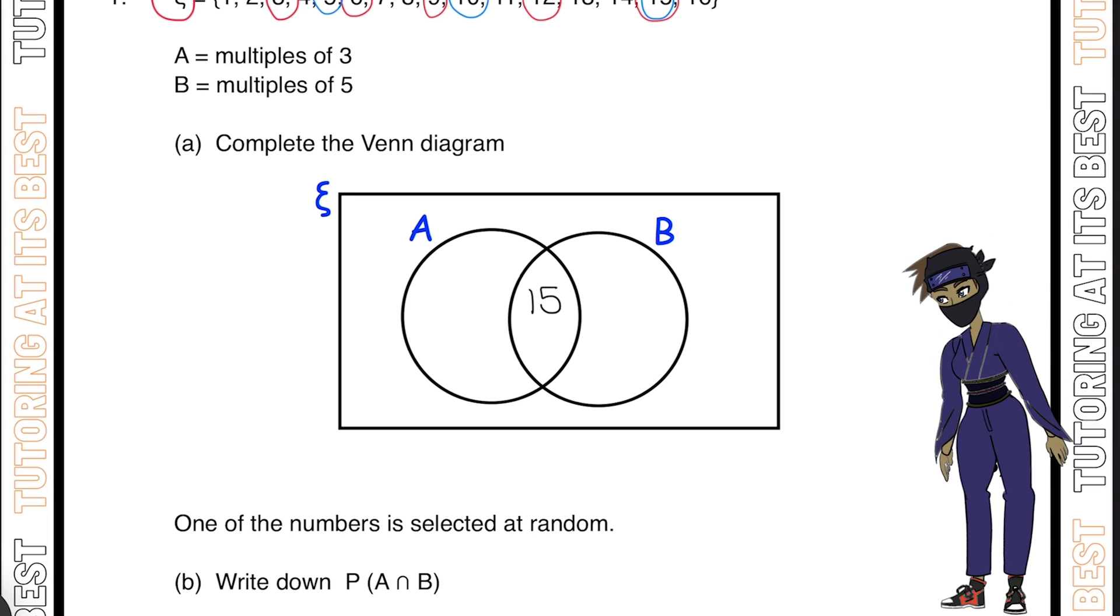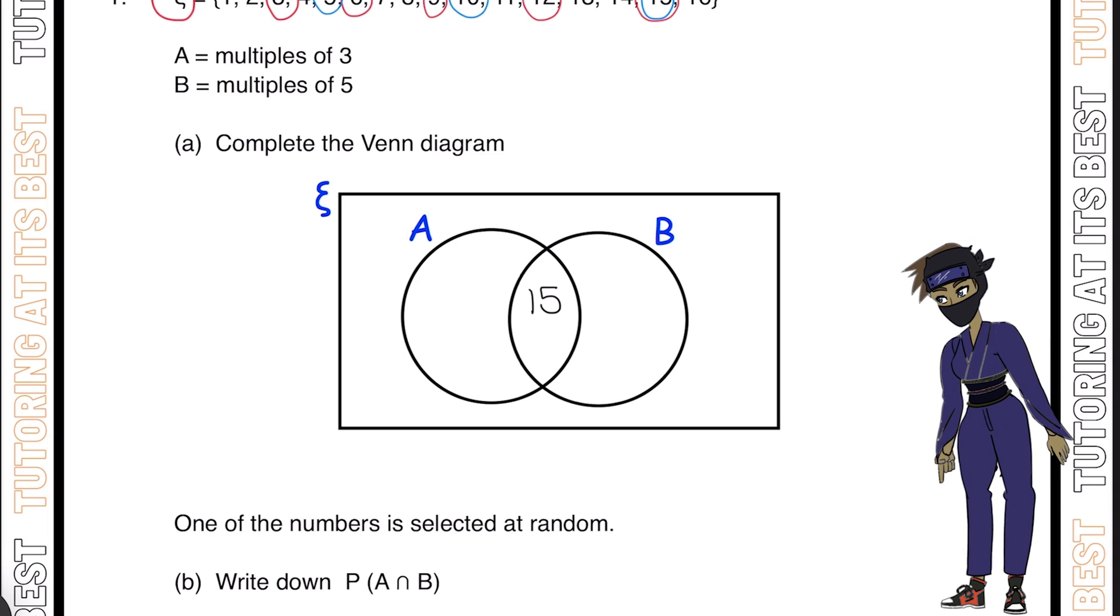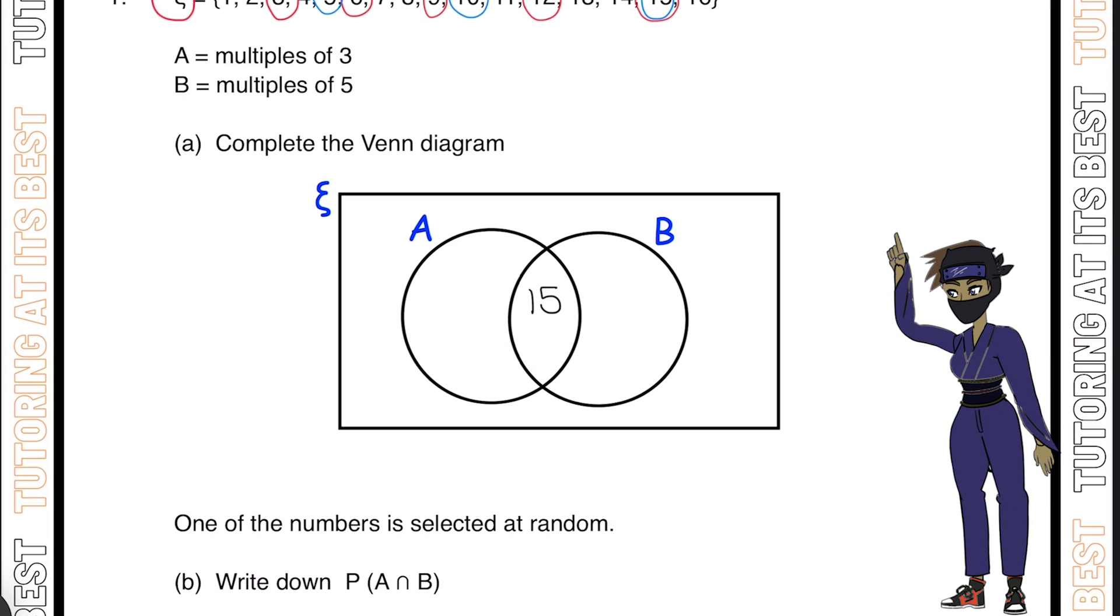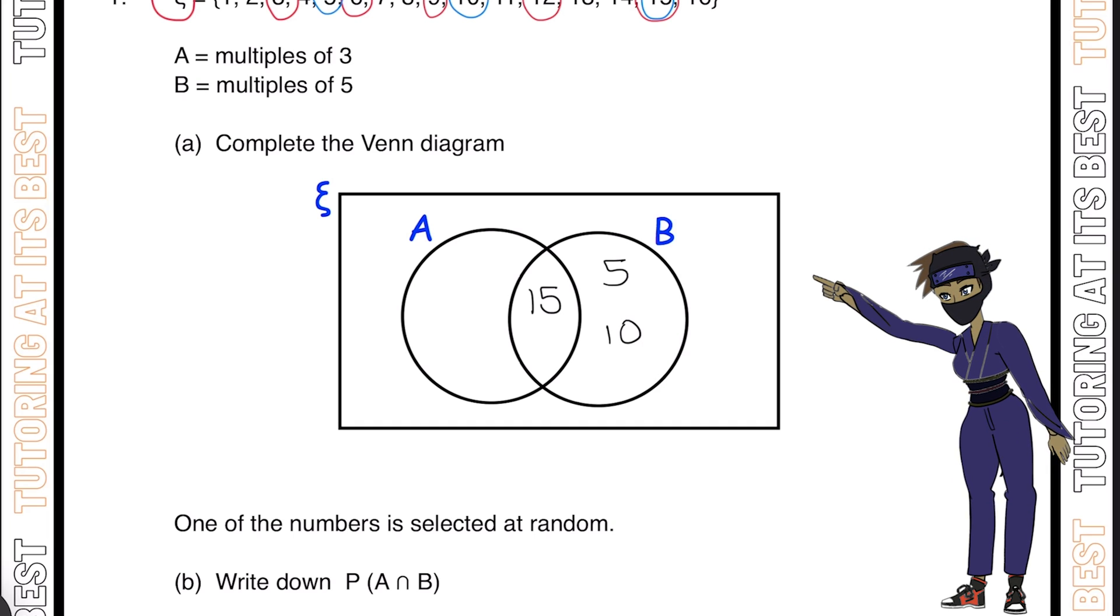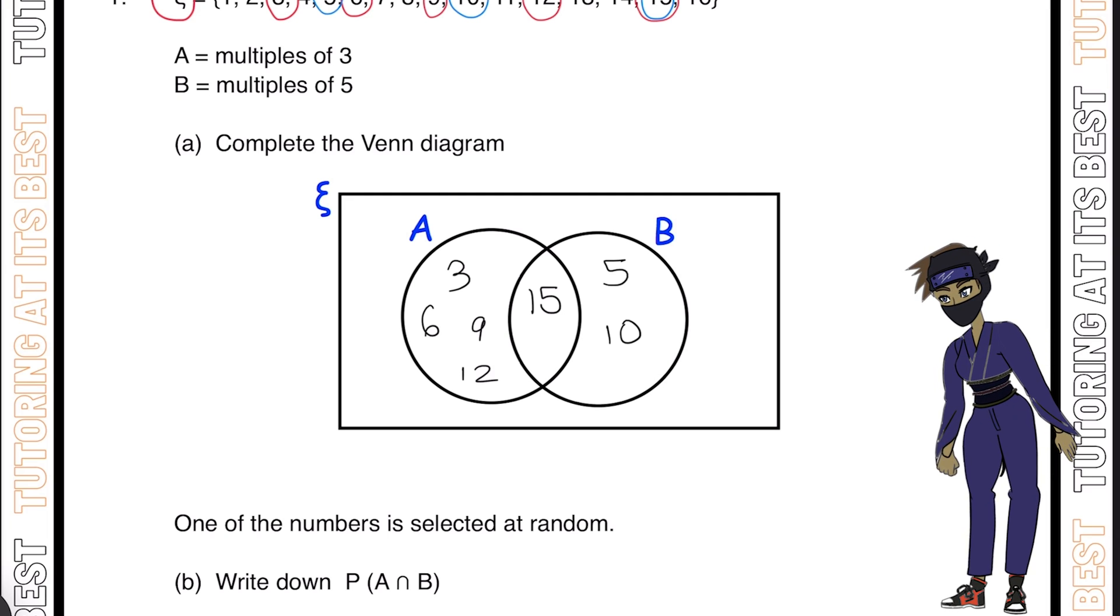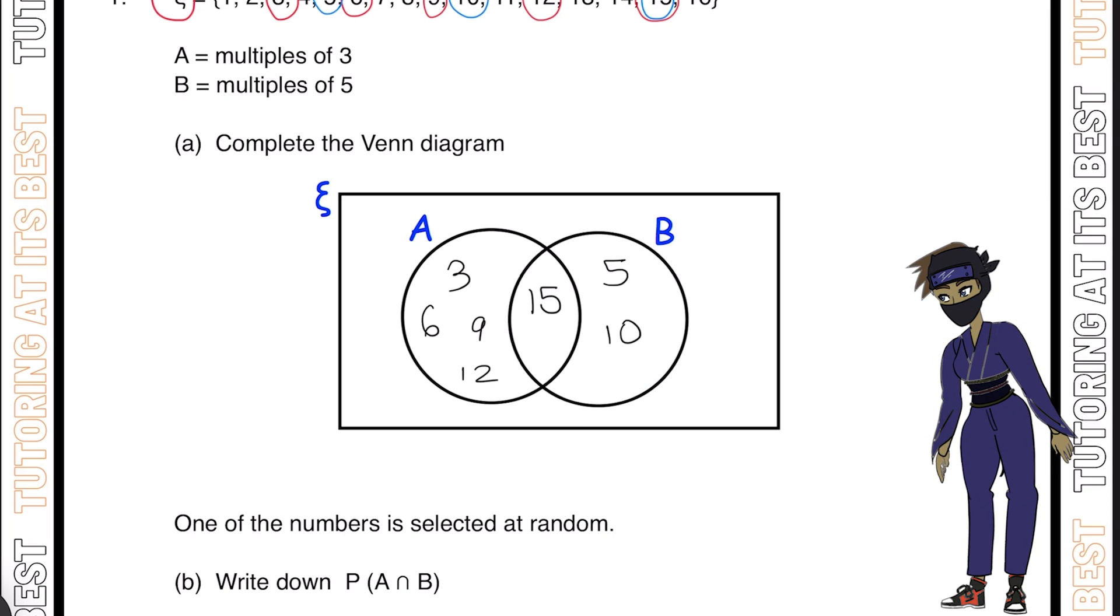For the remaining ones, whichever are red will go into A, and whichever are blue will go into B. We know that 5 and 10 were blue, so we'll put those in B. For the remaining numbers which were multiples of 3, that is 3, 6, 9, and 12.